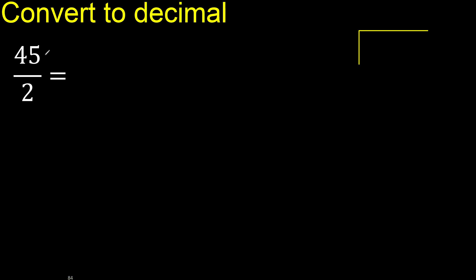45 divided by 2. 2 multiplied by which number is nearest to 4, but not greater than 4?